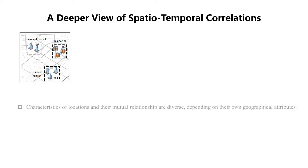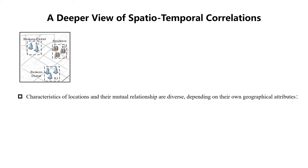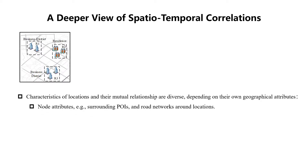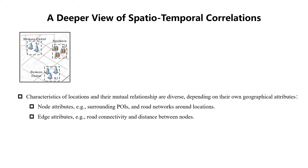Let's take a deeper look at the spatio-temporal correlations. Here is an example. First of all, characteristics of locations and their mutual relationships are diverse, depending on their own geographic attributes, including node attributes such as surrounding points of interest and road networks around a location, and edge attributes such as the connectivity of roads and the distance between nodes.